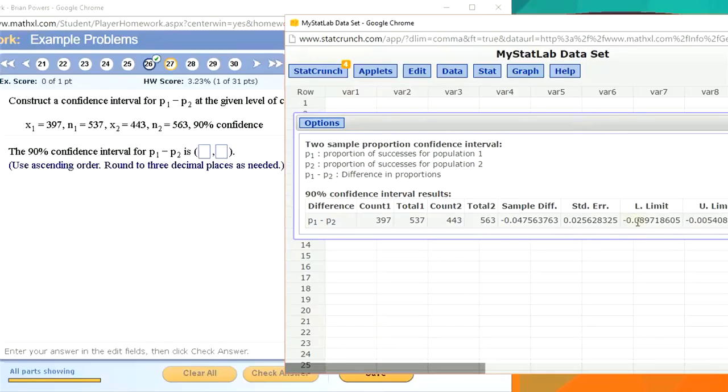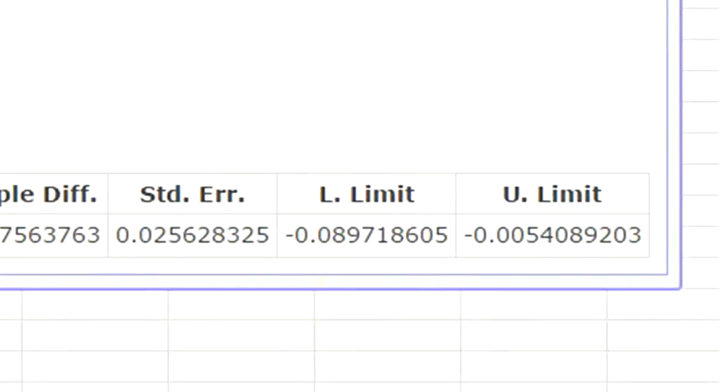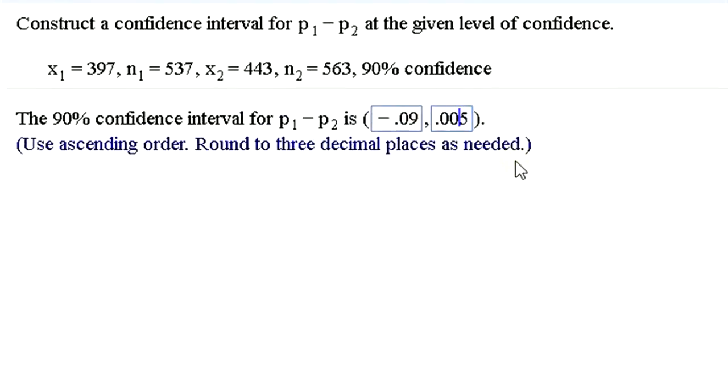And we've got it. So we've got a lower limit and an upper limit for our confidence interval. Let's just type that in. So it's negative 0.08, let's see, three decimal places, that rounds up to negative 0.09 and 0.005. Oh, it's negative. Don't want to make that mistake.